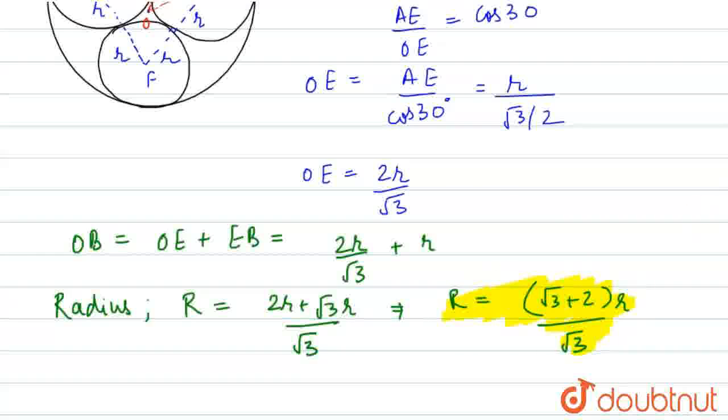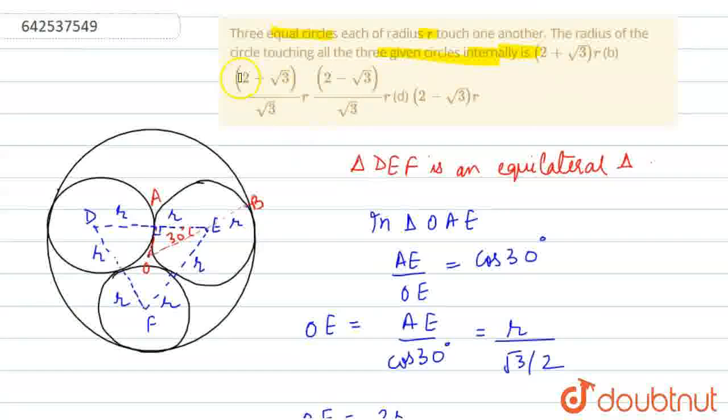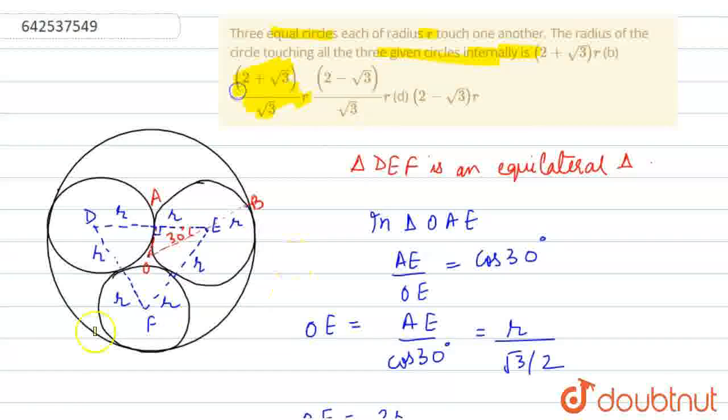Now, let me check the options. So option number B is the correct answer. Root 3 plus 2, r upon root 3. Thank you, students.